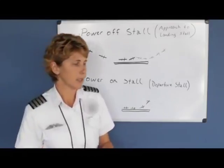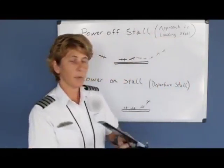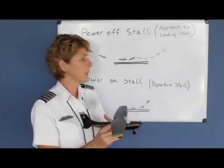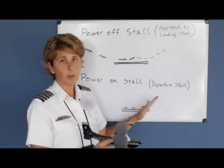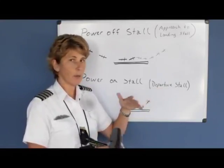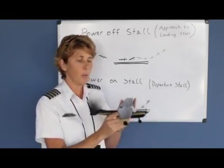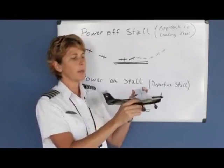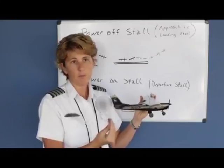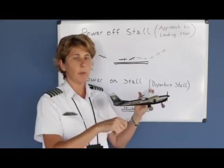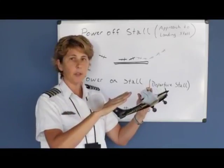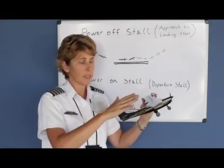Once we've done our clearing turns, altitude, and safe area check, we need to slow the plane down to simulate like we just left the runway. If your normal rotate and takeoff speed is around 60–65, we need to slow the plane down first. Typically, you'd pull the carburetor heat on, pull your power back to maybe 1,500 or 1,700 RPMs, and trim the plane a little bit while it's slowing down.